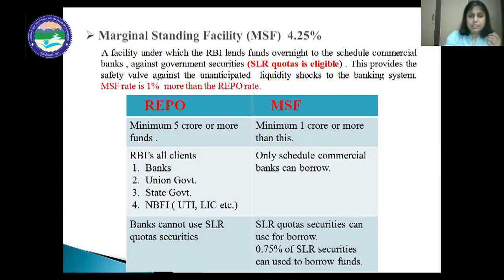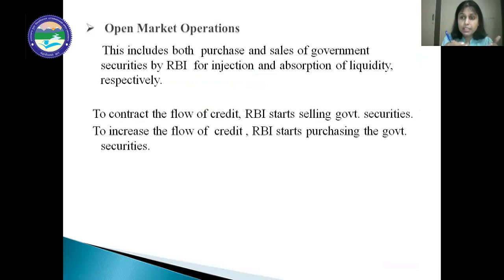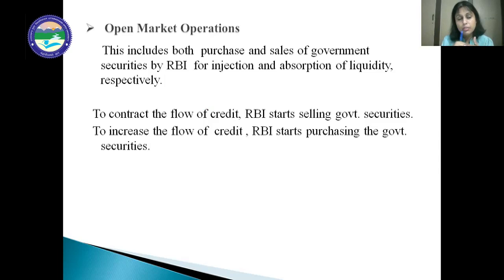The next tool is Open Market Operations. This includes both purchase and sale of government securities by the RBI for injection and absorption of liquidity respectively. If the RBI wants to reduce money supply in the economy, it starts selling government securities. To increase the money supply, the RBI starts purchasing government securities from the market. This is how open market operations work.